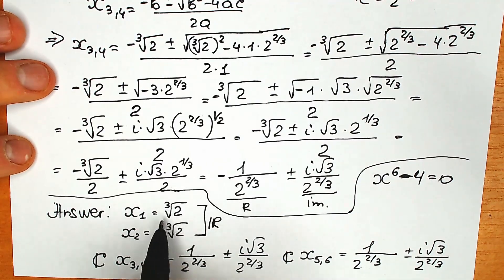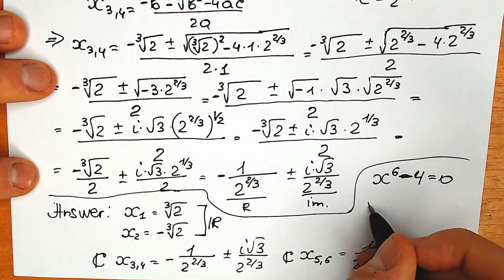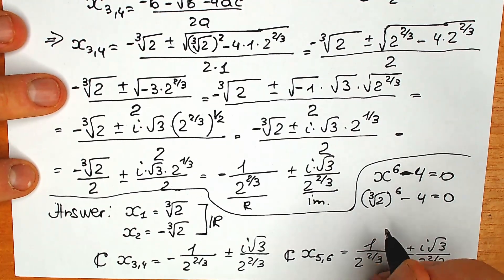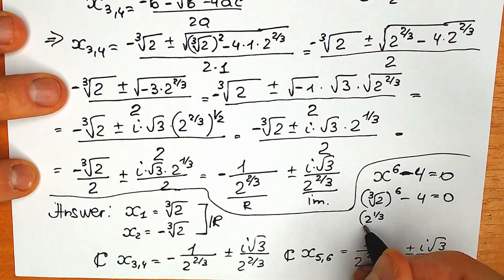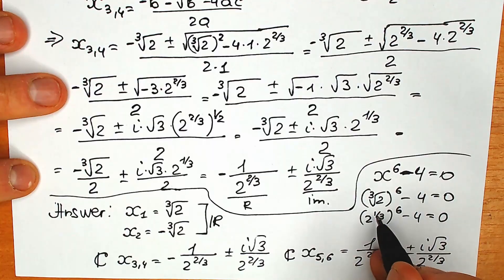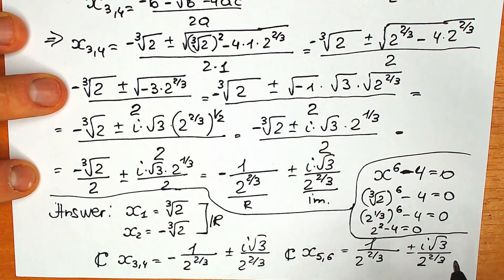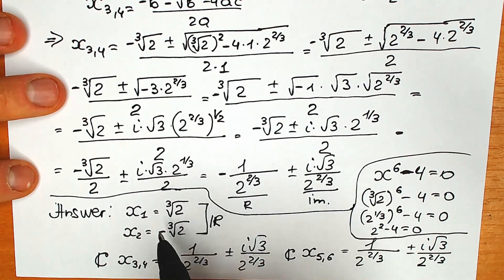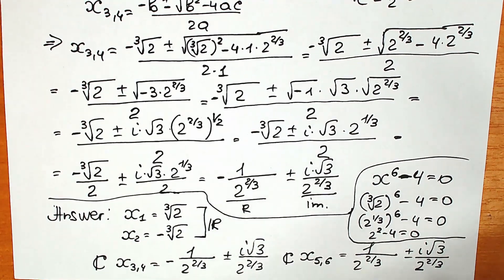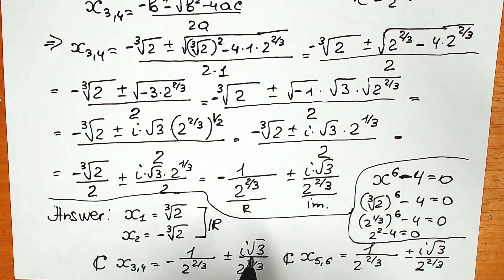Let's check x₁ quickly. Substituting cube root of 2, we can rewrite it as 2 to the power one-third raised to the sixth, minus 4 equals 0. Six over three equals 2, so we get 2 squared minus 4 equals 0. With the negative root we have an even power, so we can cancel the negative and get the same result. We have two real number roots and four complex roots.